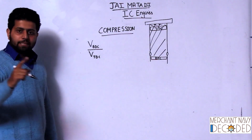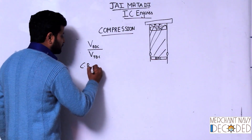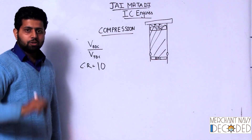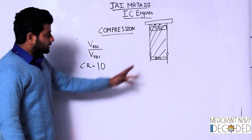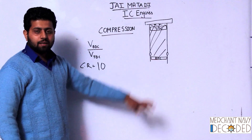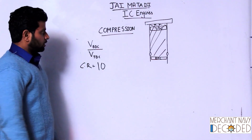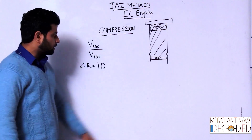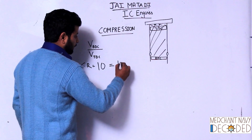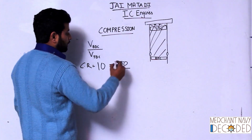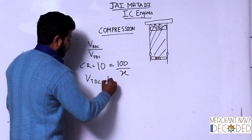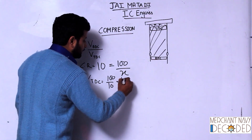Say someone tells you the compression ratio of this engine is 10, and the volume that the liner occupies when the piston is at BDC is 100 cubic meters. Can you tell me the volume when the piston is at TDC? Yes — 10 = 100 cubic meters / X, so volume at TDC = 100 / 10 = 10 cubic meters.